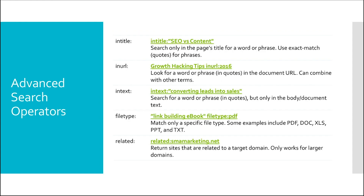The next type are the advanced search operators — these are much more targeted and something we use a lot in link building. We have intitle, inurl, intext, filetype, and related. Again, these aren't all of them, but these are the ones you'll use the most.